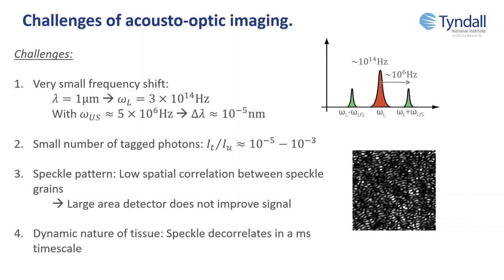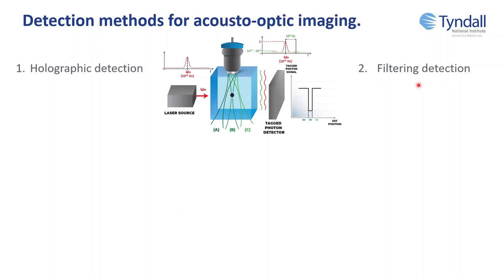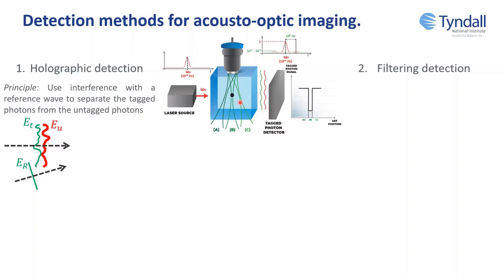How can we detect the tagged photons? I'm going to present two main detection methods: one based on holography and another based on filtering. The idea is you have your light source, your scattering medium, and you send ultrasound. You want to detect the tagged photons depending on where your ultrasound is focused. You need a tagged photon detector that can separate the tagged photons from the untagged photons. The first method is holography — using interference with a reference wave. The reference is pre-frequency shifted at the same frequency as the tagged photons, and you have the interference figure with all the resulting terms.